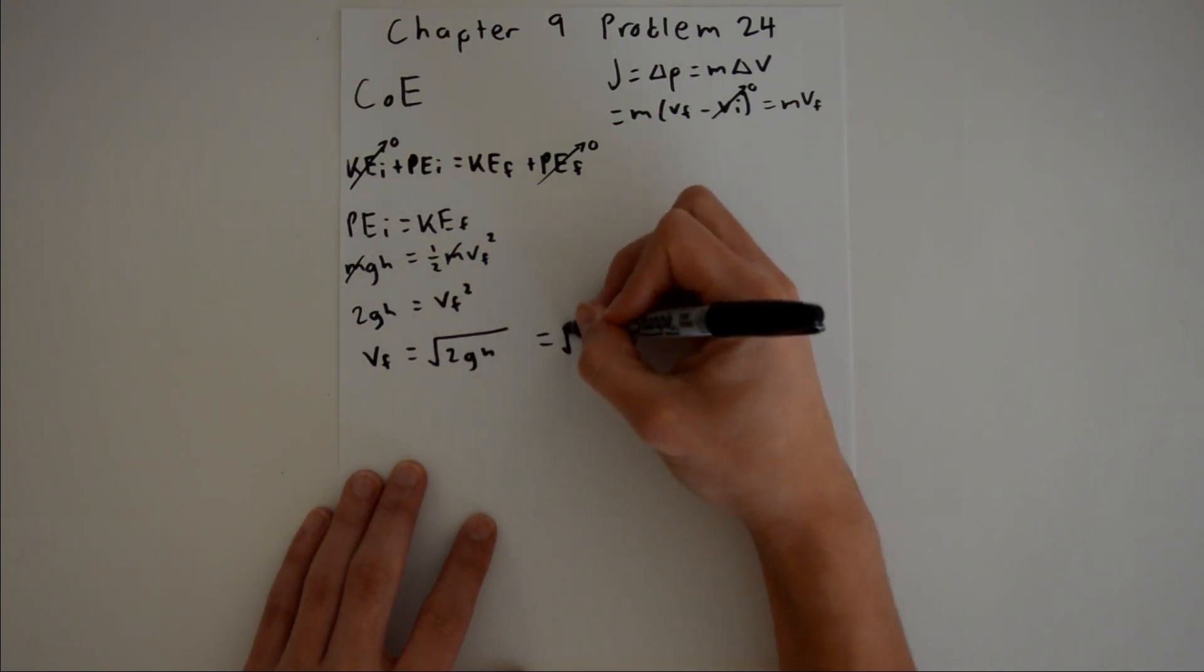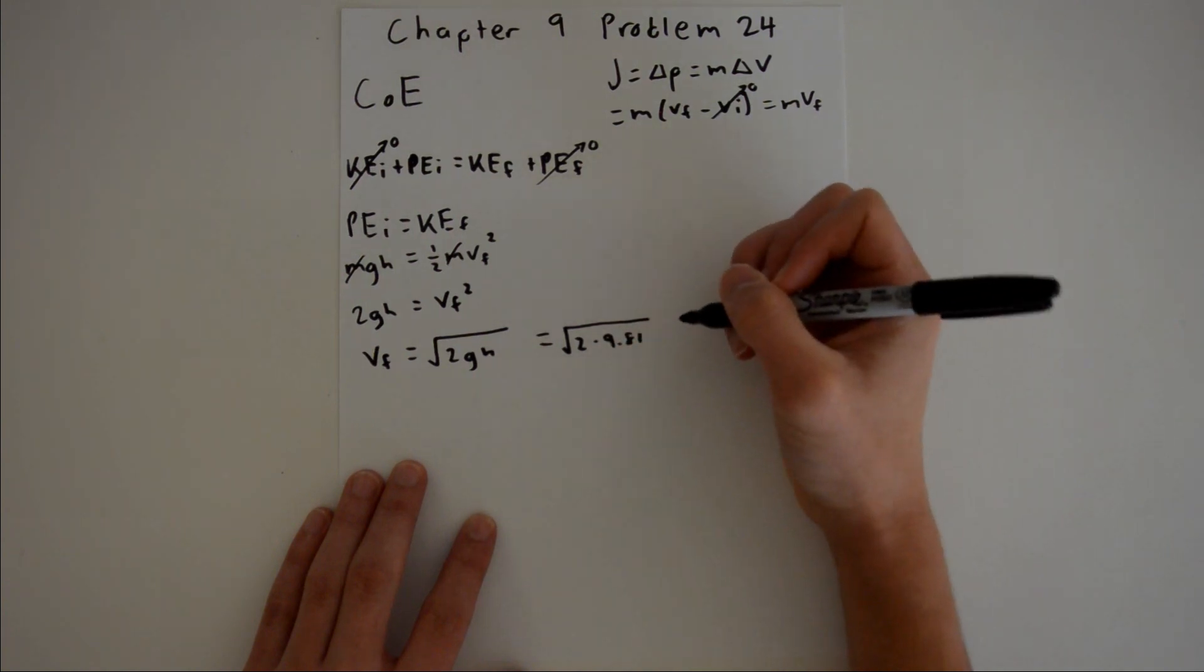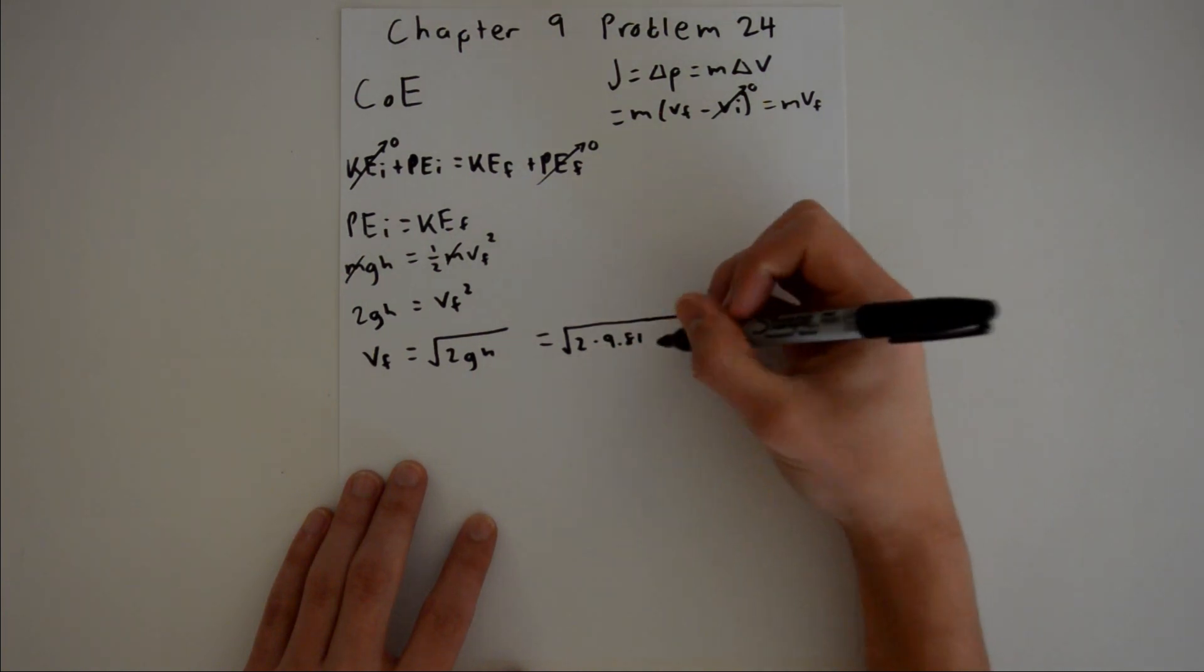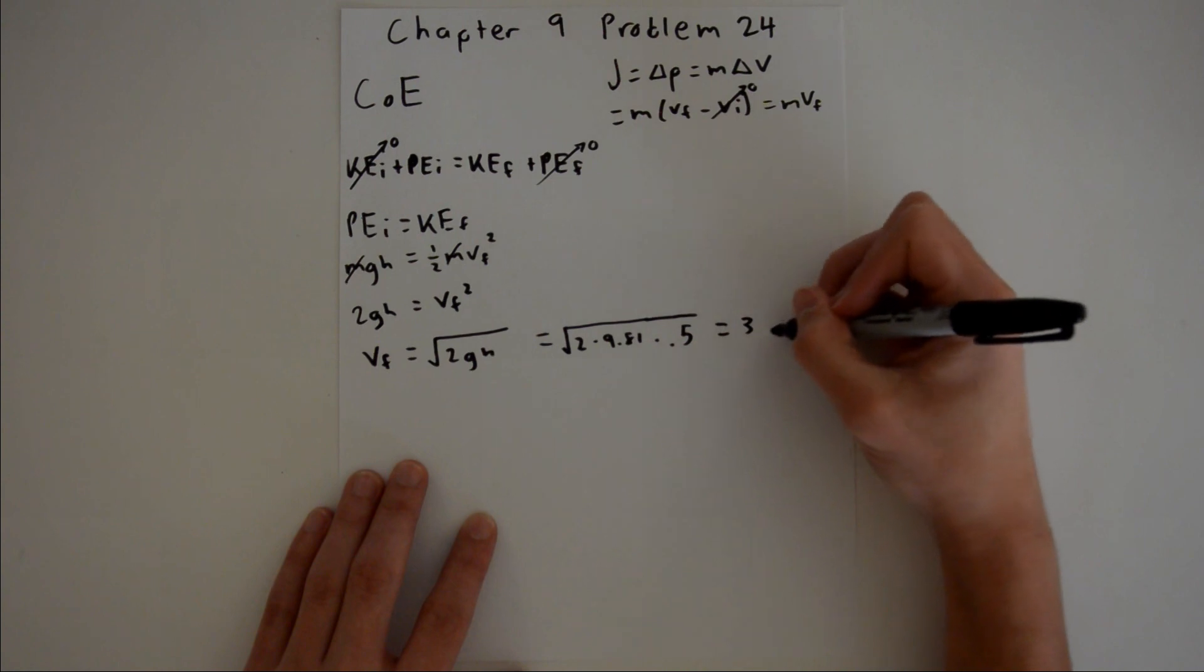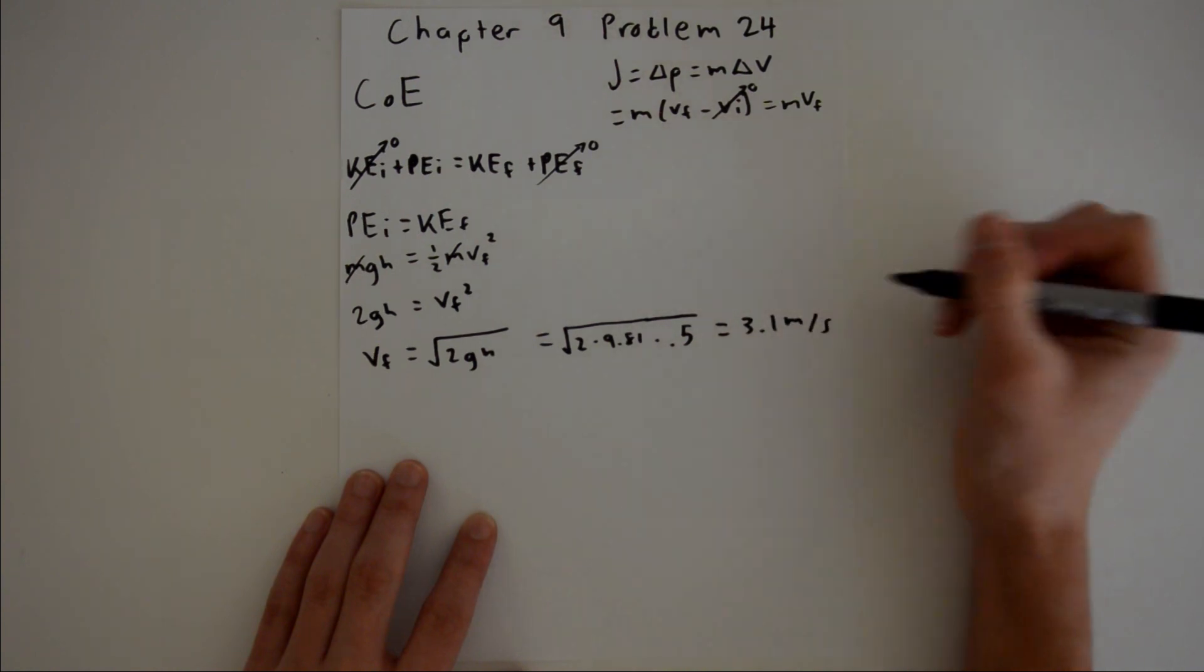We have all those values, so we can substitute them in. When you put that into your calculator, you should get about 3.1 meters per second.